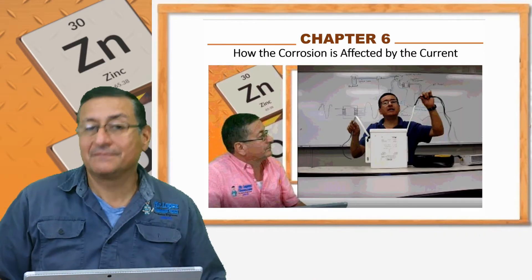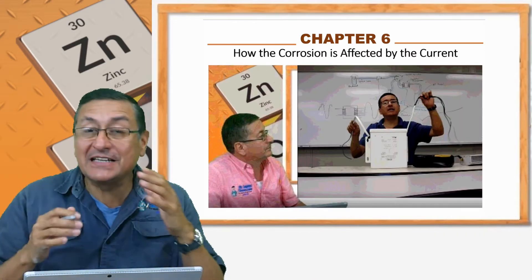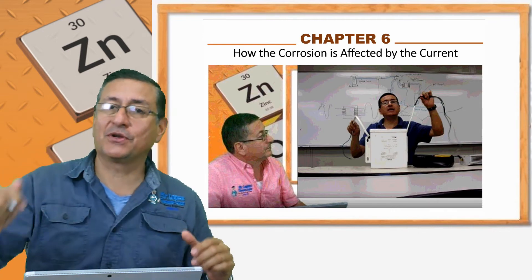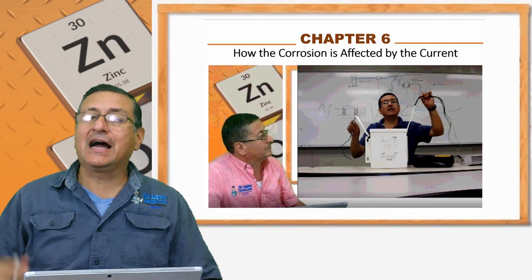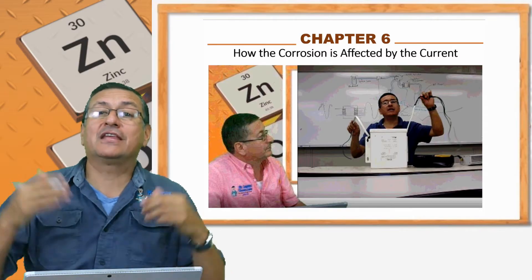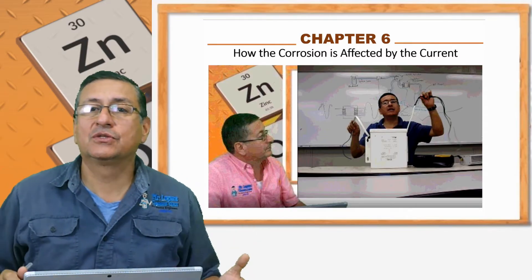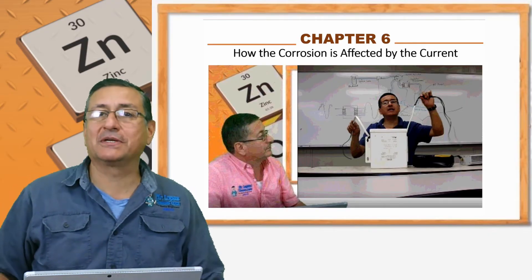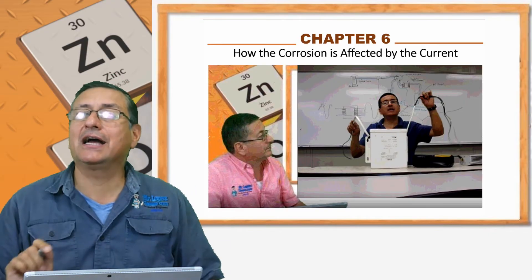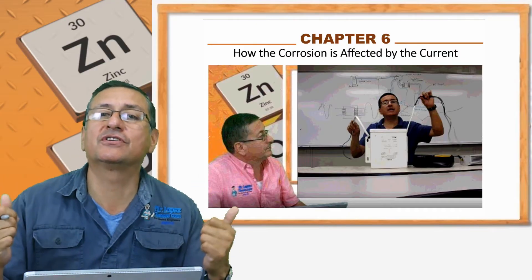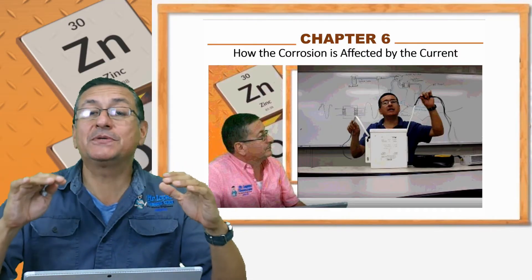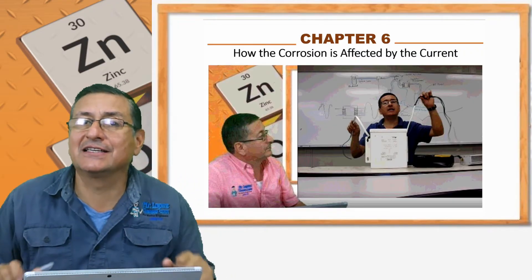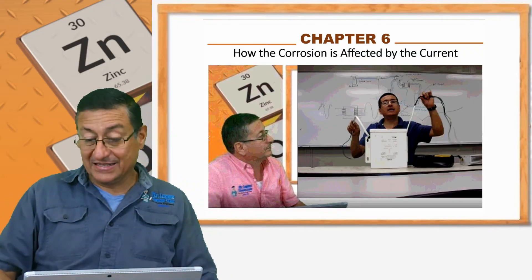In Chapter 6, we are going to analyze the current — how current accelerates the process of corrosion and how we can avoid current traveling through the metals. This is a wonderful chapter: how AC and DC current accelerate the process of corrosion, and some tips and techniques to identify where those current leaks are located. That's Chapter 6.